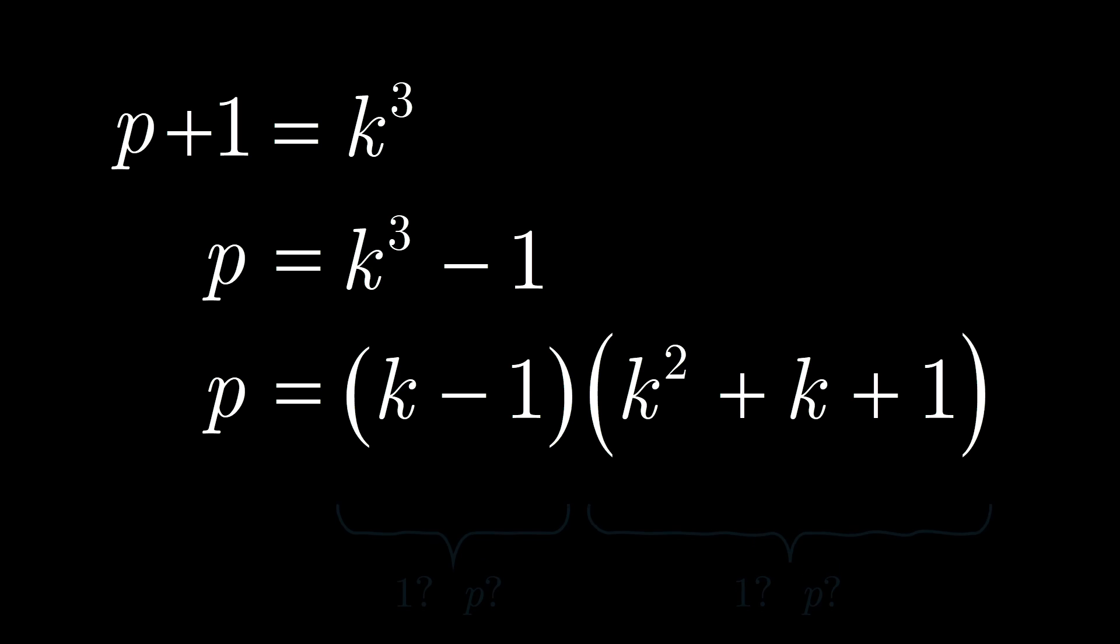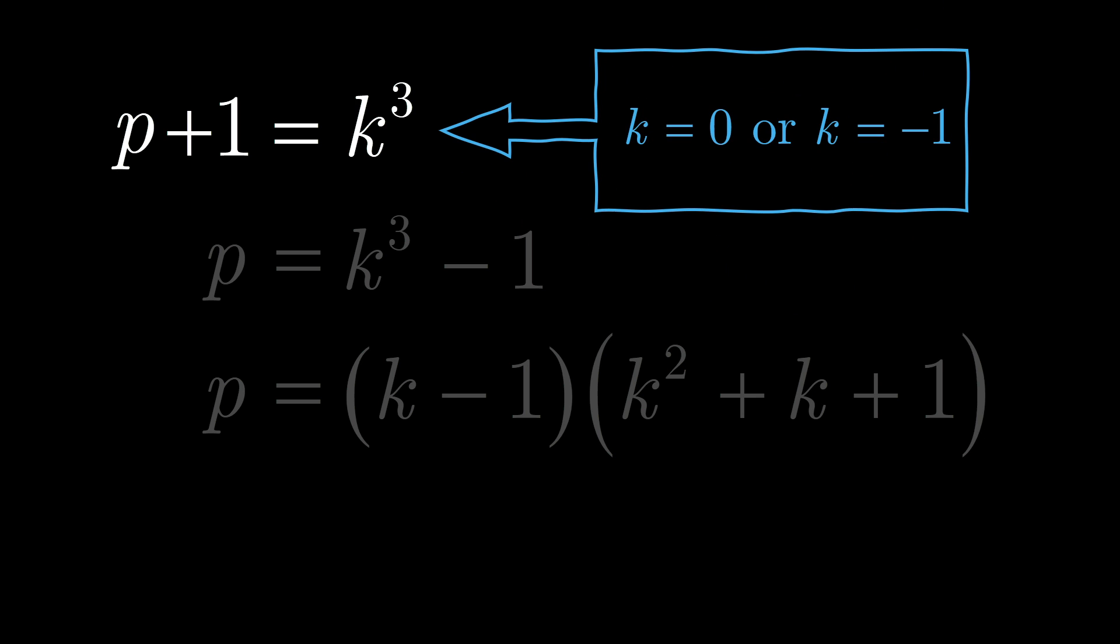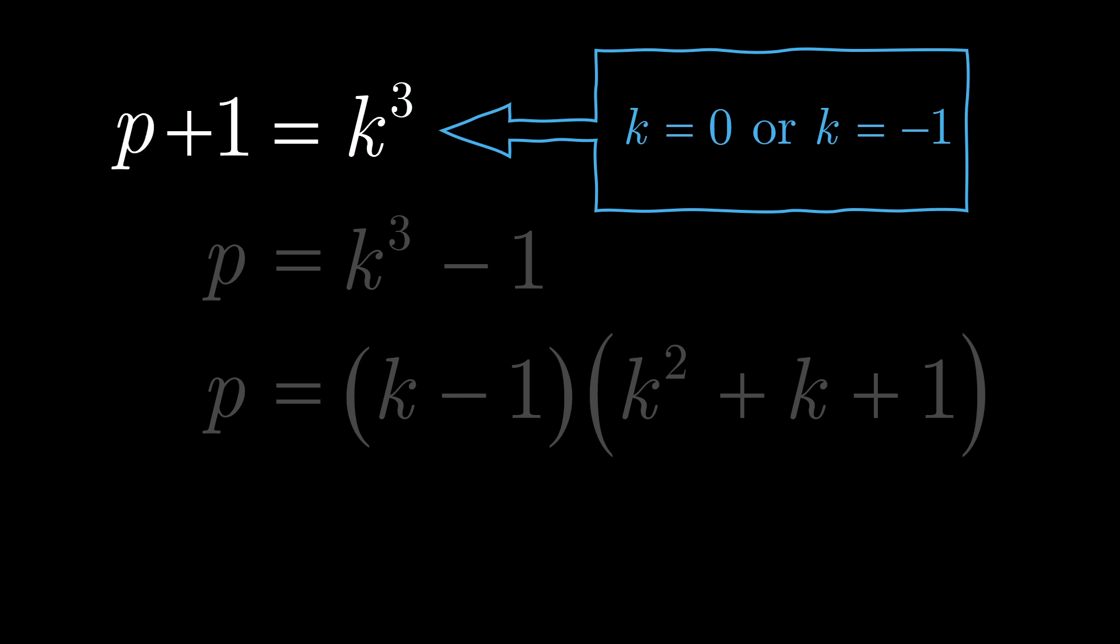Let's look more closely at our second factor here. Could this factor be the one that is equal to 1? It turns out that it cannot, as that would imply that k is either 0 or negative 1. Both of these results are unacceptable, since k cubed is supposed to be 1 greater than a prime number.